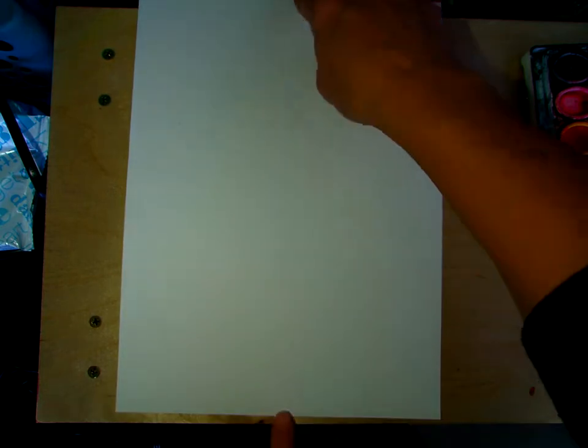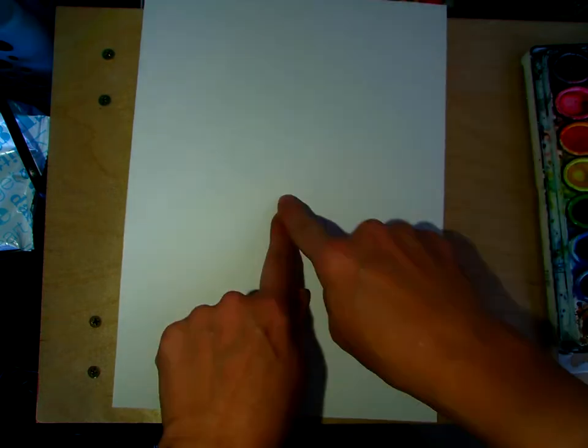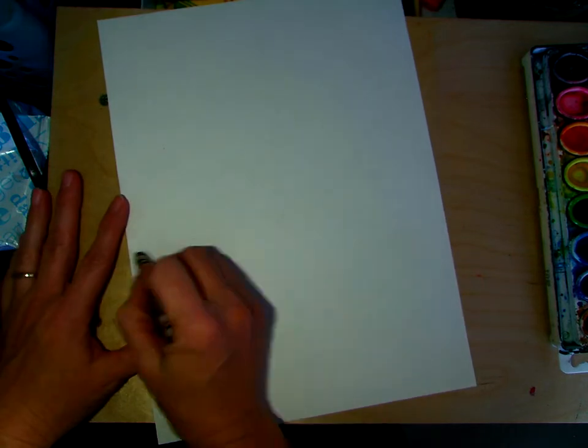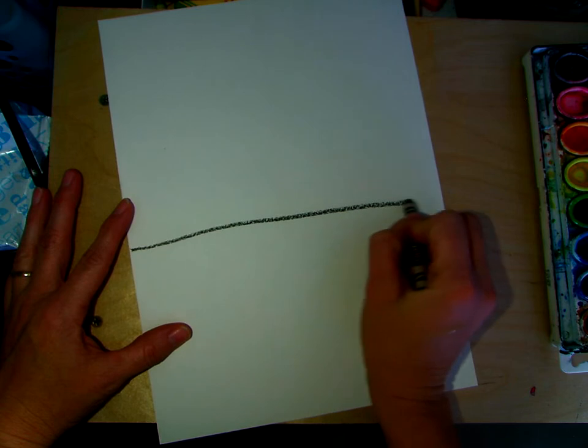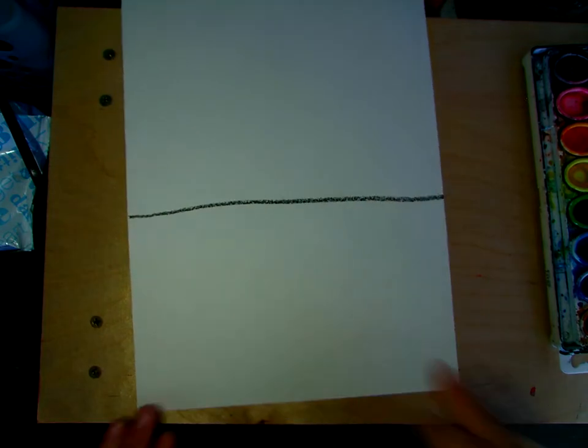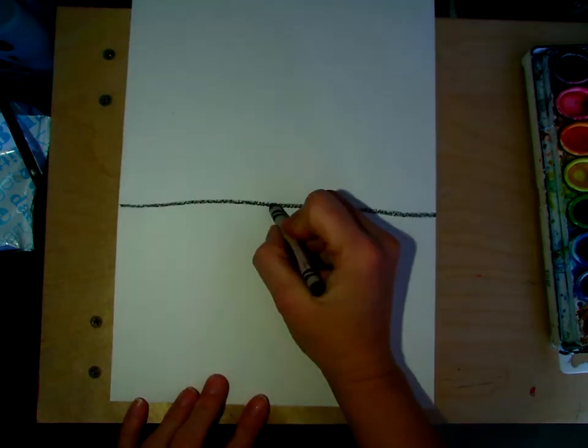I just start on the edges of the paper and bring my fingers together at the same speed. That's our middle. I'm going to draw a horizontal line across my paper, just like that, and give myself a dot about in the middle of that line.